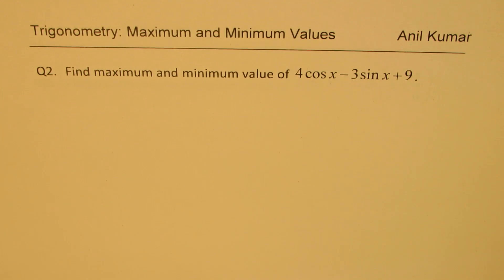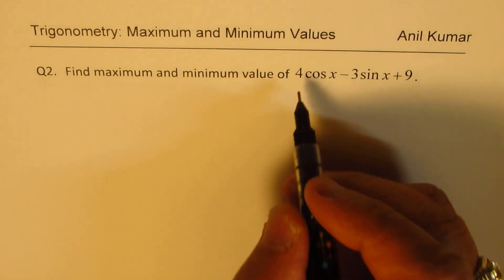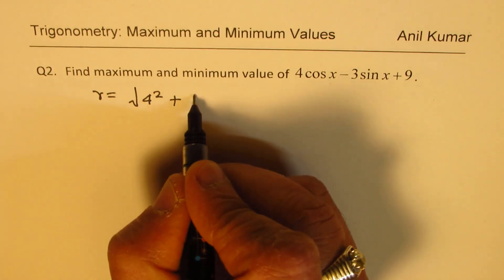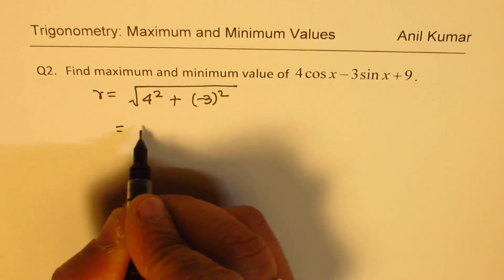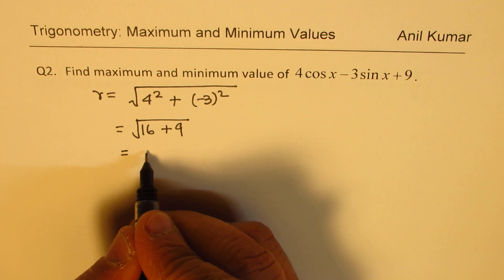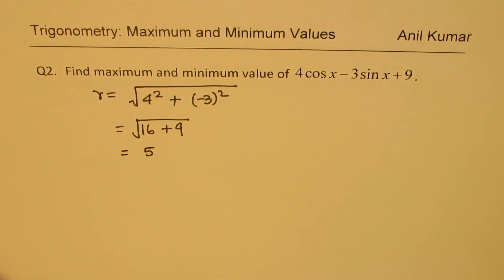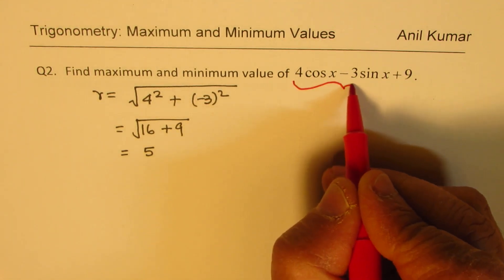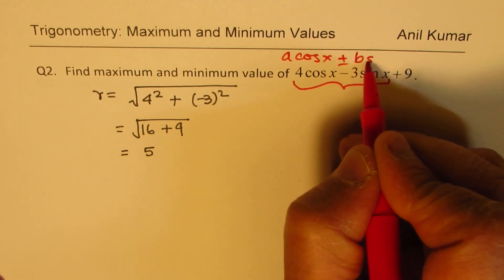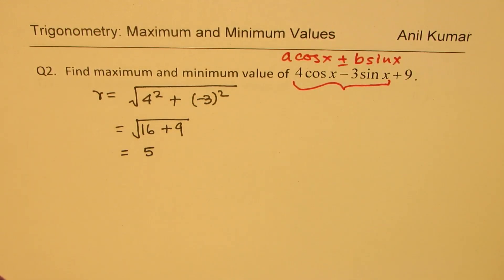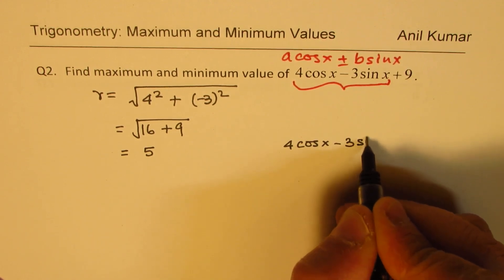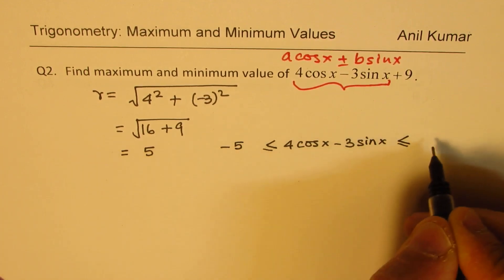Now let's take question number 2. Here we have the value of r equal to square root of 4 squared plus 3 squared, which is square root of 16 plus 9, and that gives us plus or minus 5. So we know that the maximum value for the part 4 cos x minus 3 sin x is between minus 5 and plus 5.